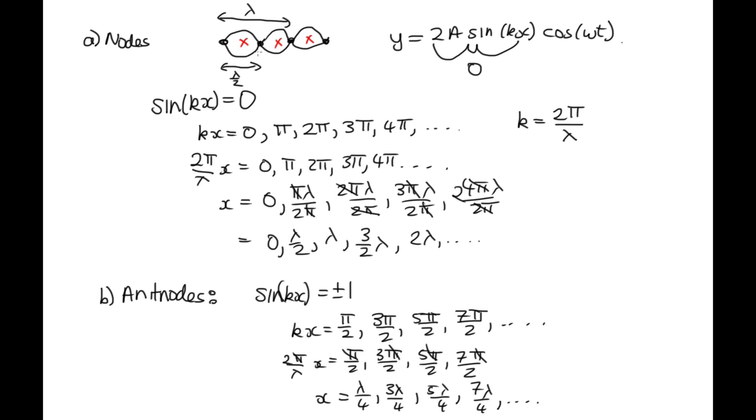So again, the distance between two antinodes is λ over 2. And so if we want to measure one wavelength, we need to take two of these loops.